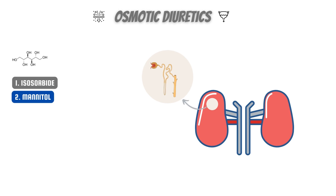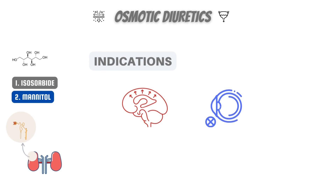Osmotic diuretics act on the water-permeable parts of the nephron in the kidney. These substances have the ability to affect different body parts. They can be used, for instance, to lower intracranial and intraocular pressure. Osmotic diuretics boost plasma volume without affecting the neurological system since they do not penetrate the blood-brain barrier.